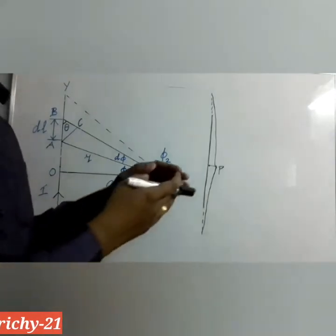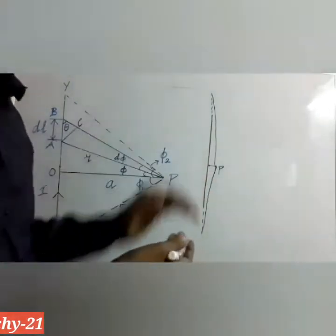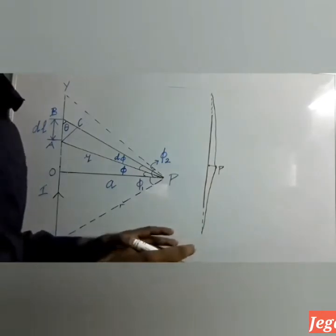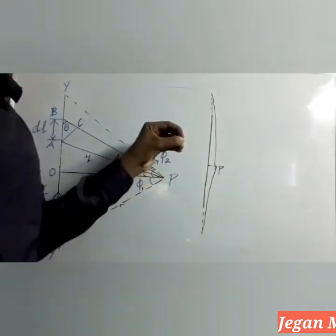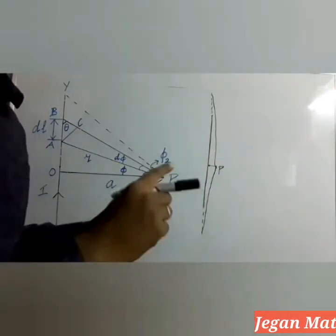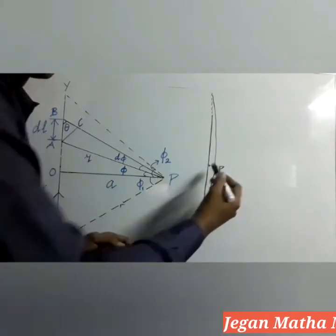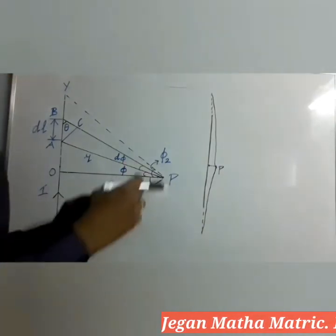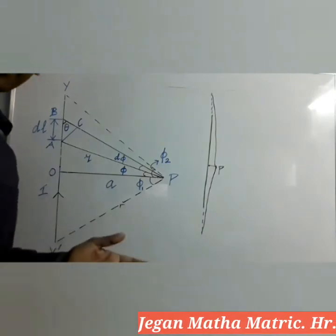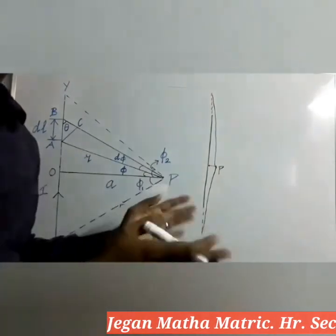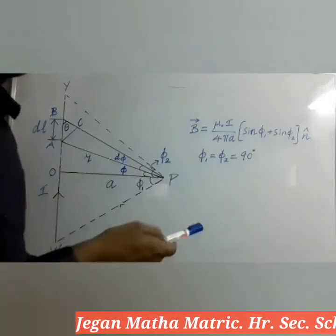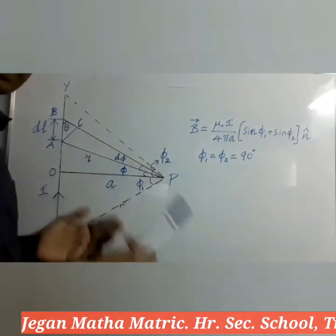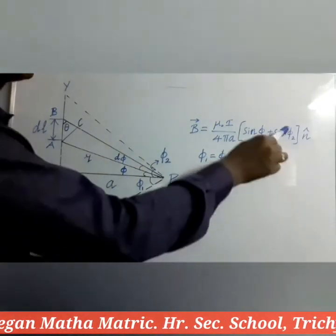As discussed, we have taken an infinitely long straight conductor. Compared to the length of the wire, the distance A between point P and the wire is negligible. In this case, the arrangement can be considered as a straight wire, and the total angle is 180°, divided equally at point P as 90° each. So for the infinite wire, Φ₂ equals 90° and Φ₁ also equals 90°.